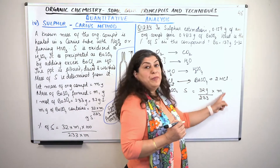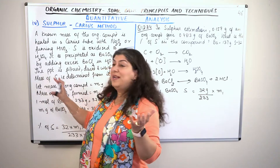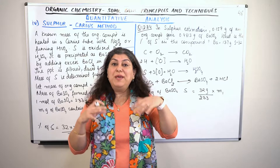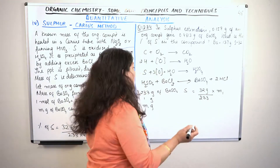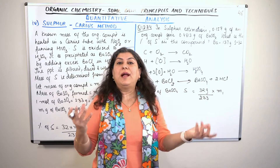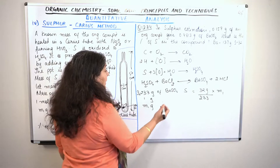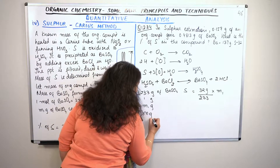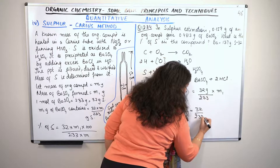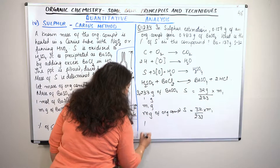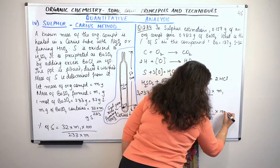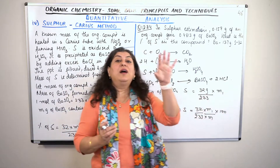This sulfur produced came entirely from the organic compound, so the sulfur present in the organic compound is (32/233)×M1 grams. Now we calculate the mass percentage: in M grams of organic compound, the sulfur is (32/233)×M1 grams. Dividing by M and multiplying by 100 gives you how much sulfur is present per 100 grams of the compound, which is the mass percentage.